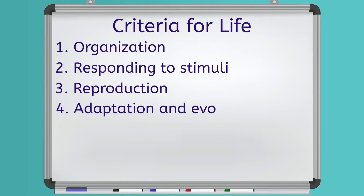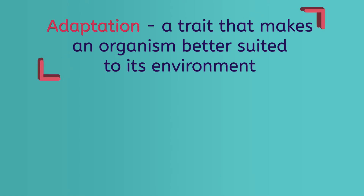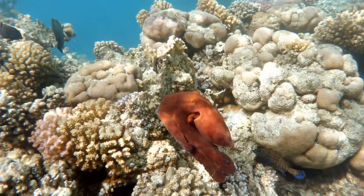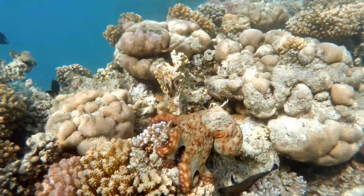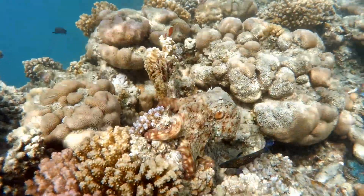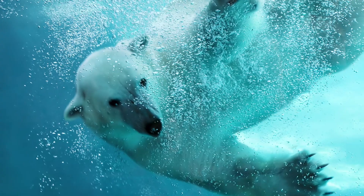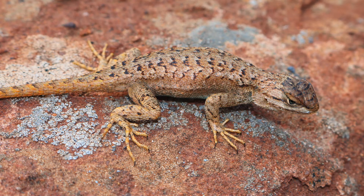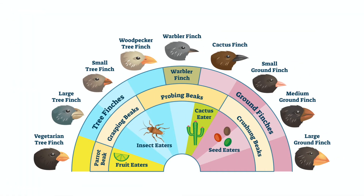Criteria number four is adaptation and evolution. Simply put, an adaptation is a trait that makes an organism better suited to its environment. These are really features that help organisms survive long-term, like camouflage in an octopus, or like extra layers of fat on organisms that live in cold climates. Organisms that are best adapted to their environment survive and reproduce better. As this happens over and over, the organism may change or evolve — hence the term evolution.